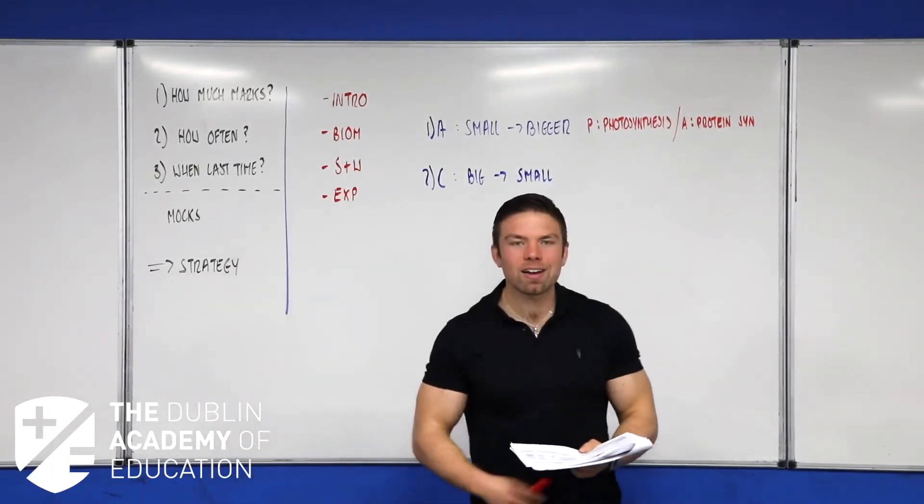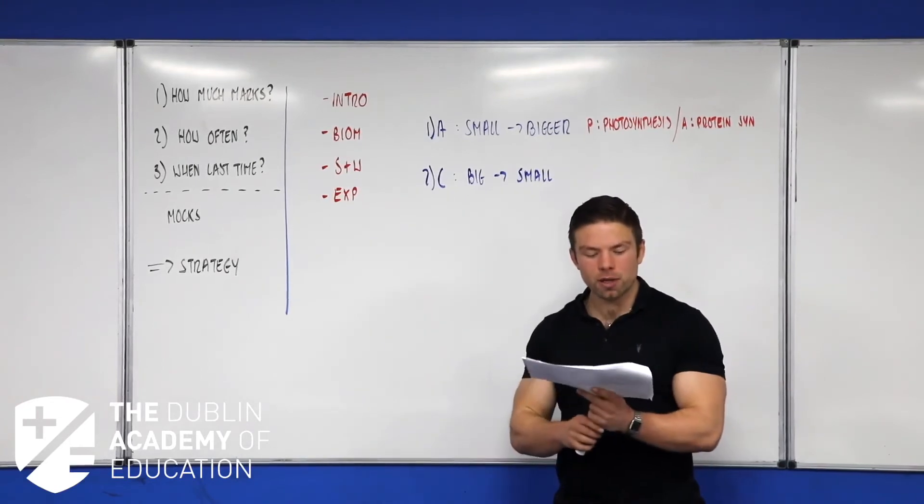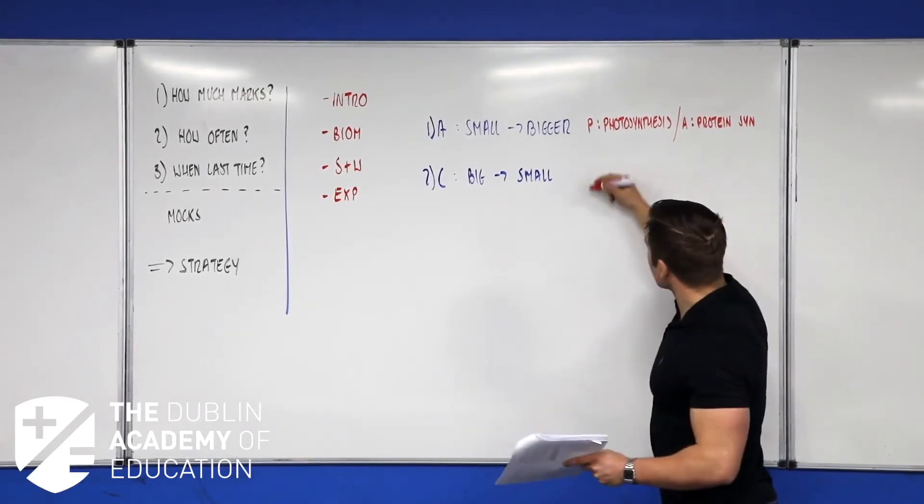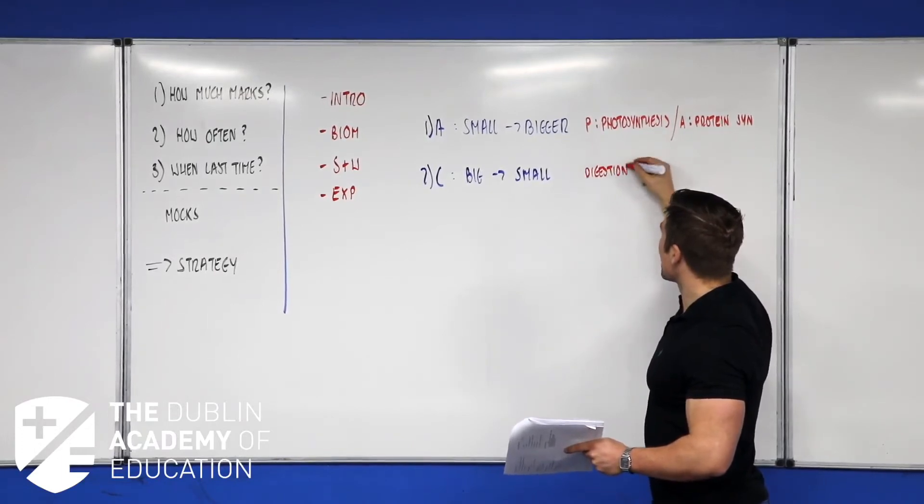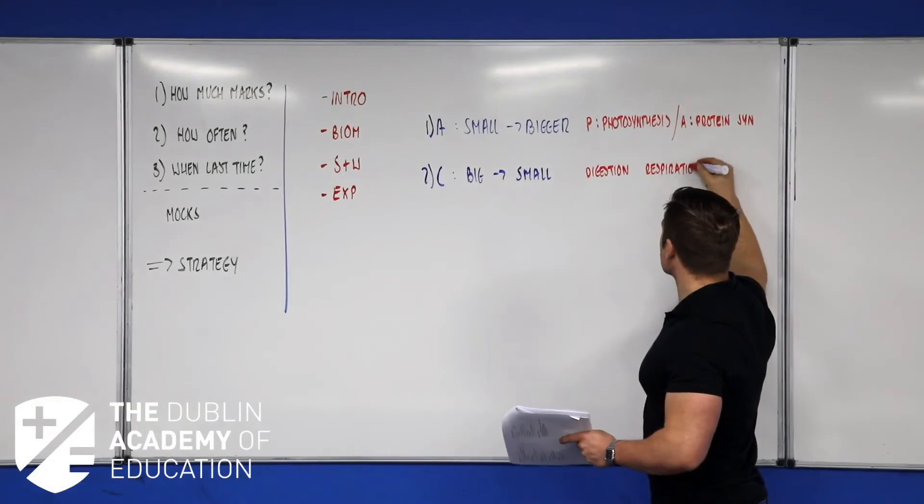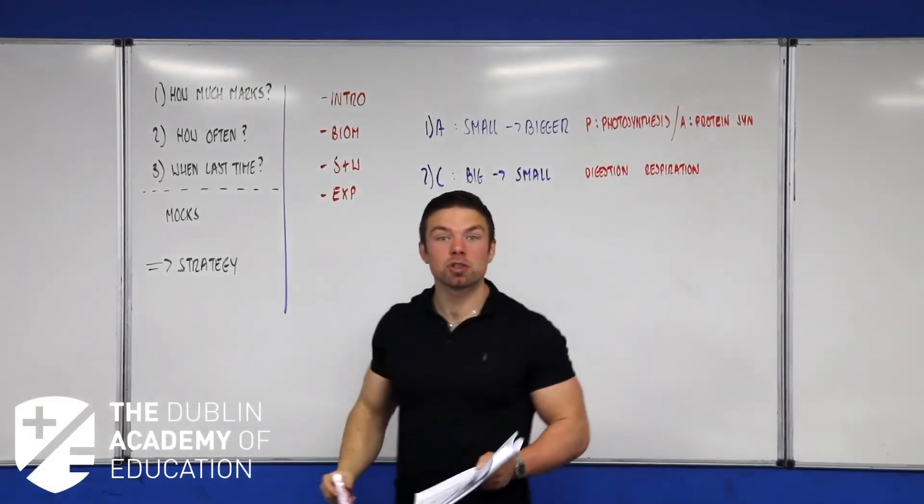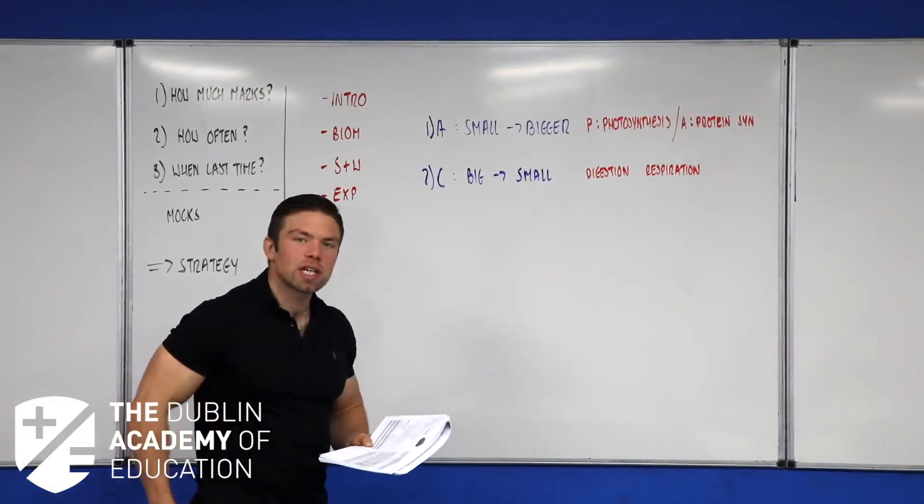We need to know two catabolic reactions. One for a plant and one for an animal as well. I'm going to just use digestion and respiration. So they're two major major chapters for us as well. Let me just point this out to you. I know an animal does both of these.